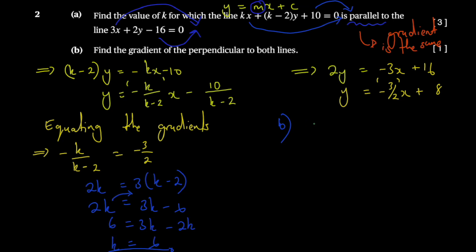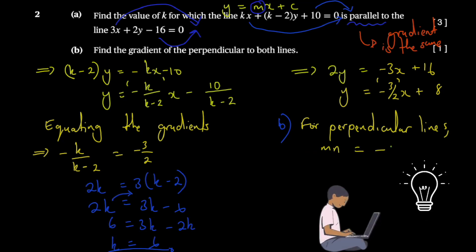For perpendicular lines, m × n = -1. This is standard presentation format. They would understand that m and n are gradients.